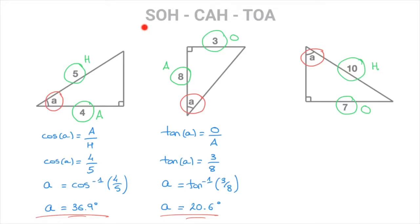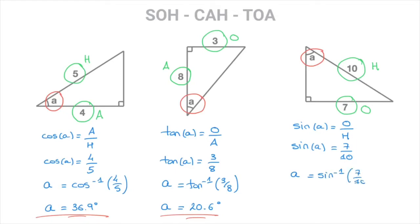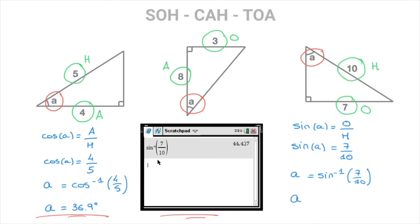SOH tells us that the sine of an angle is equal to its opposite side length divided by the hypotenuse. So for this angle A, we write that sine of A is equal to the opposite over the hypotenuse. Replacing O by 7 and H by 10, this becomes sine of A equals 7 over 10. At this stage we know the sine of angle A is 7 over 10, so to get the actual value of angle A, we use the inverse sine: A equals inverse sine of 7 over 10. Using our calculators and rounding to one decimal place, we find that angle A is equal to 44.4 degrees. And that's the final answer.